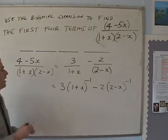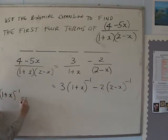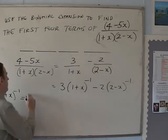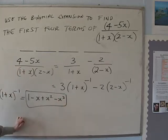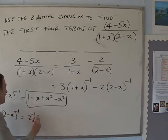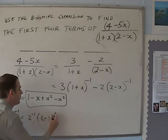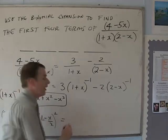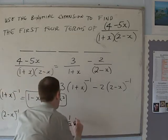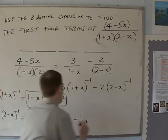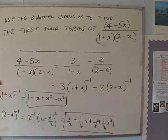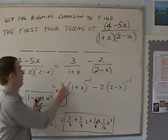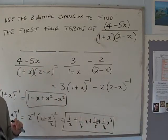For (1 + x)^(−1), expanding exactly as normal gives 1 − x + x² − x³ — those are the first four terms. For (2 − x)^(−1), we first need to take out the 2: it becomes 2^(−1) × (1 − x/2)^(−1). Multiplying all of that out, we end up with 1/2 + (1/4)x + (1/8)x² + (1/16)x³. We then take 3 lots of the first expansion and subtract 2 lots of the second, adding up all terms to find the final answer.